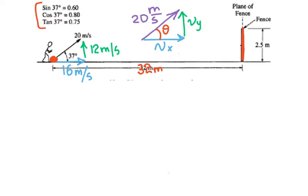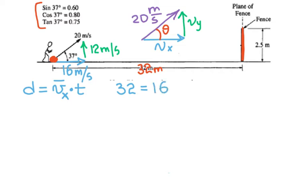To figure out the time to reach the fence, traveling at horizontal velocity of 16 meters per second over 32 meters, we use the horizontal distance formula: distance equals average velocity times time. Since horizontal velocity doesn't change — no forces act forward with air resistance negligible — 32 meters equals 16 meters per second times time. So the time to reach the fence is 2 seconds.